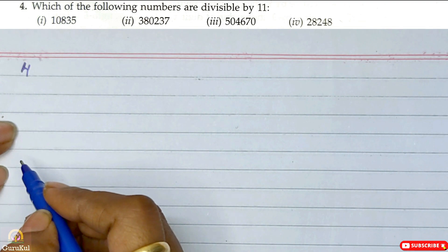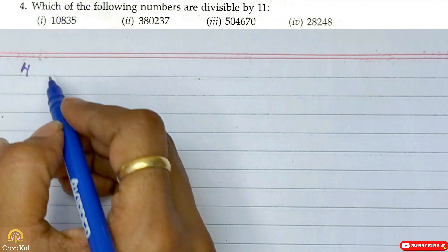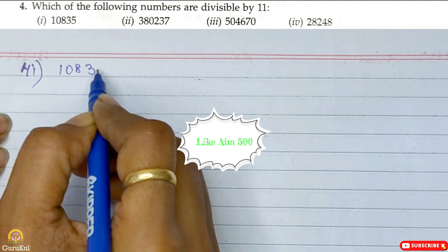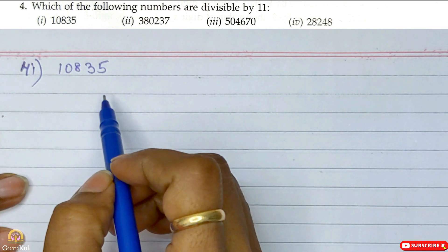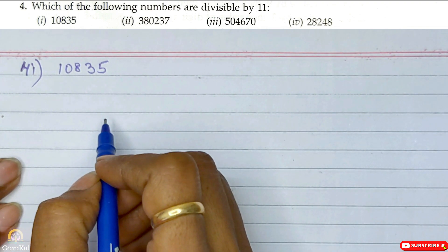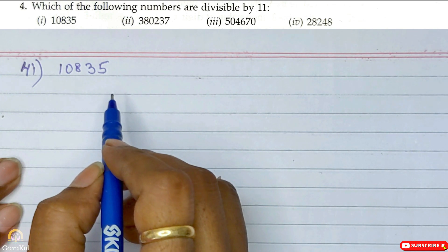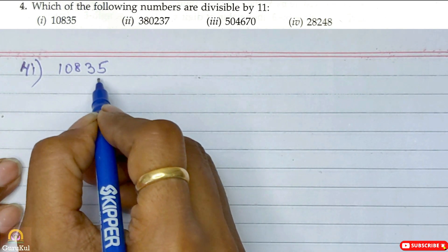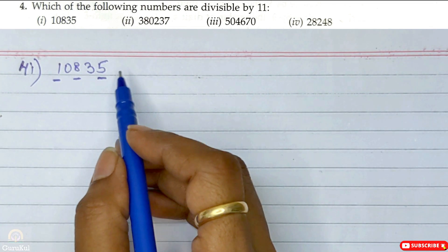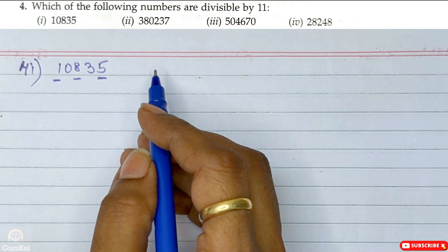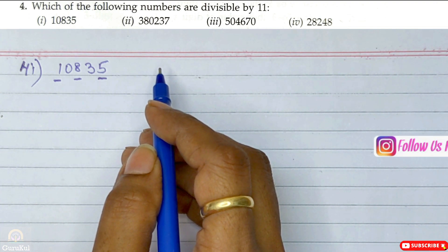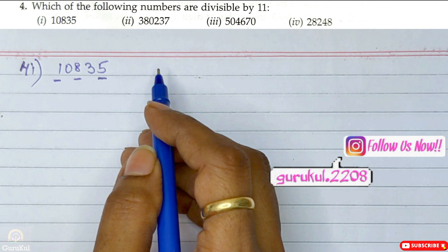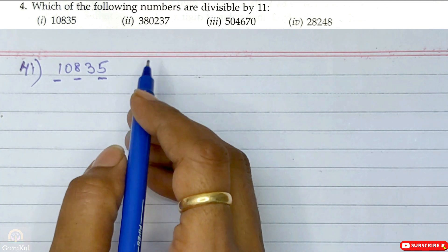Now question number 4: which of the following numbers are divisible by 11? The first part is 10835. In order to find out whether the given number is divisible by 11 or not, a number is divisible by 11 if the difference of the sum of digits at the odd places and the sum of the digits at even places is either 0 or divisible by 11.